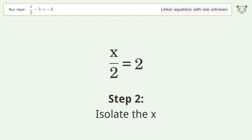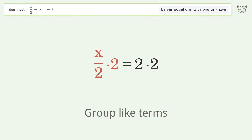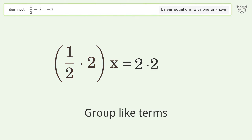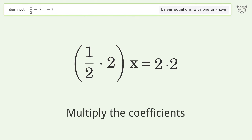Isolate the x by multiplying both sides by 2. Group like terms, then multiply the coefficients.